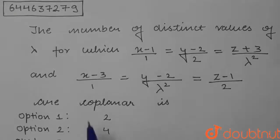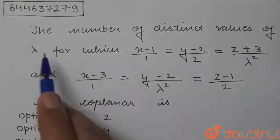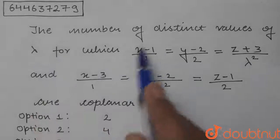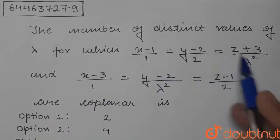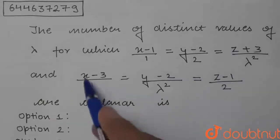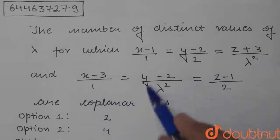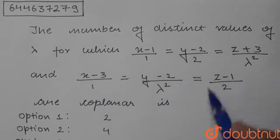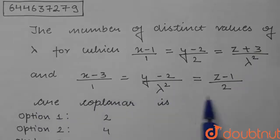Hello students, today's question is: the number of distinct values of lambda for which (x−1)/1 = (y−2)/2 = (z+3)/λ² and (x−3)/1 = (y−2)/λ² = (z−1)/2 are coplanar.